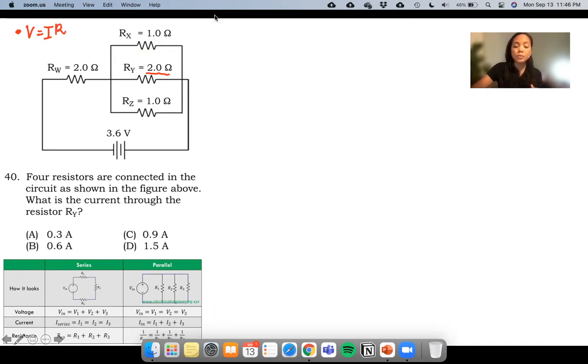So first, let's compute for the resistance in this area. What is the total resistance in this area? We have 1 over R is equal to 1 over 1 plus 1 over 2 plus 1 over 1.